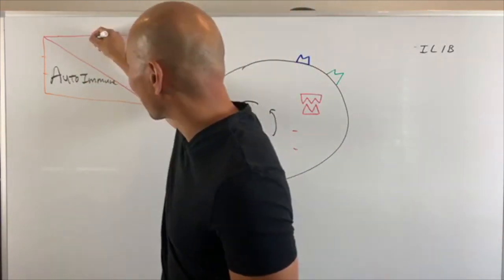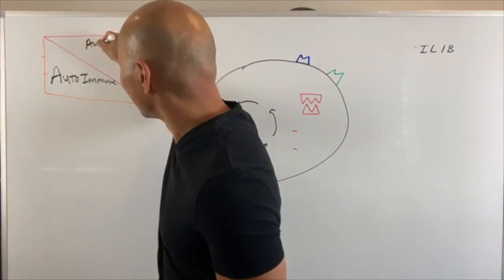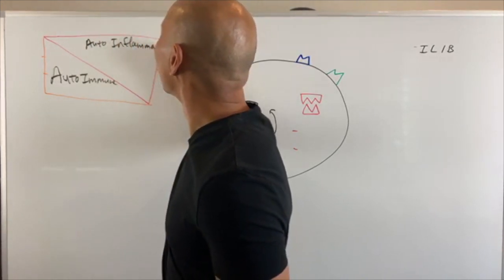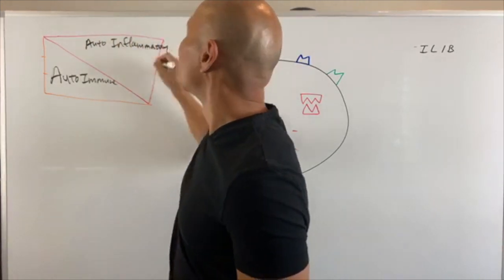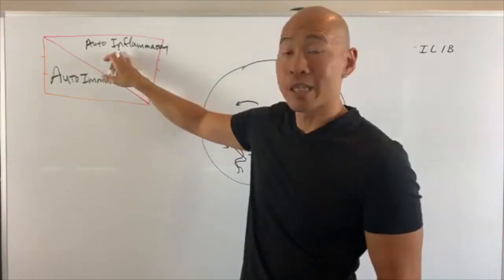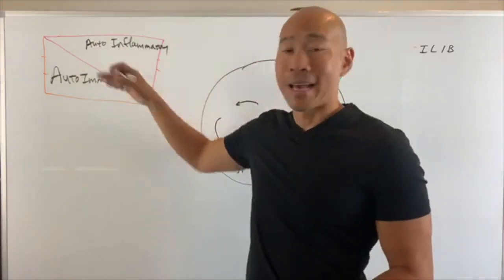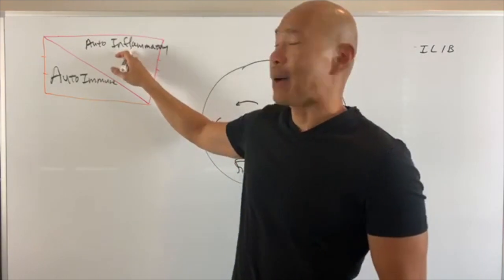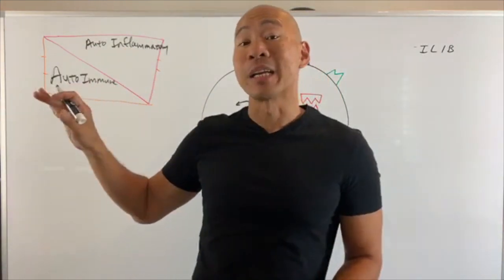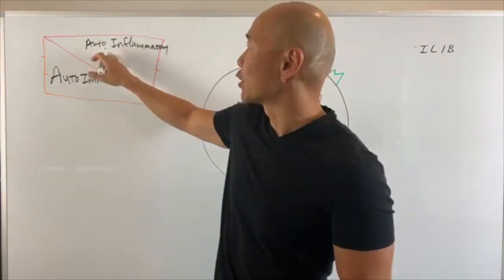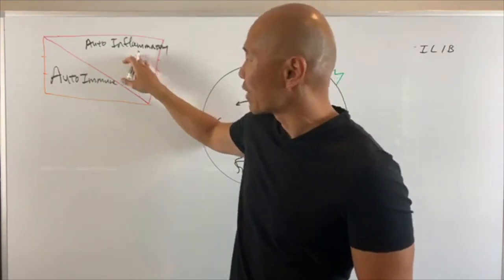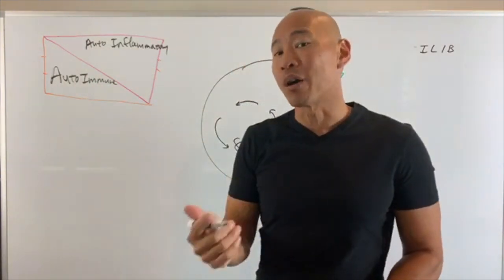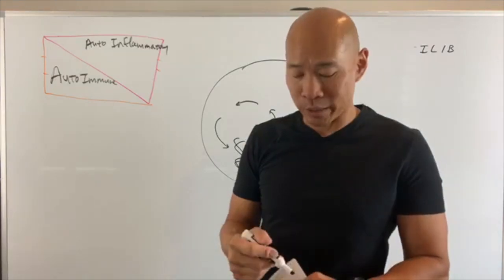On the top here we have what's called auto-inflammatory disease. These are typically hereditary diseases that show up in people. An example is Mediterranean fever, which is an example of an auto-inflammatory disease.